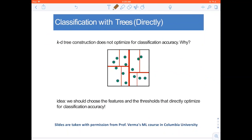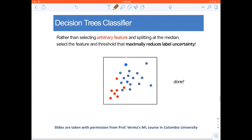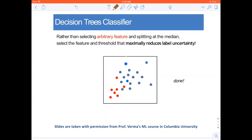Now, we come to classification with trees directly. We learned about KD trees, but KD trees do not optimize for classification accuracy. Why? Because the KD tree optimizes for the nearest neighbor to become good. When we are doing classification using KD trees, we are first finding the nearest neighbors and then looking at the majority label of those nearest neighbors and then assigning the class. But if you want to do classification, is there a more direct way? Why do we first have to find the nearest neighbors and then do the classification? That's why we have the decision tree classifier.